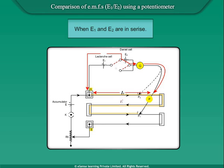If the balancing length is L1, therefore AP1 = L1, and E1 + E2 = KL1.